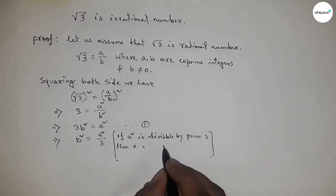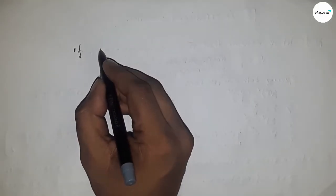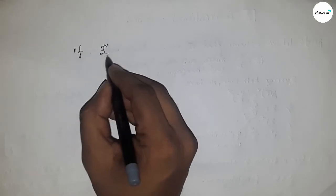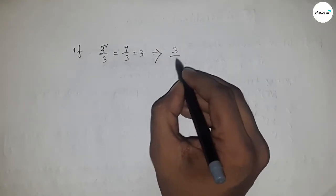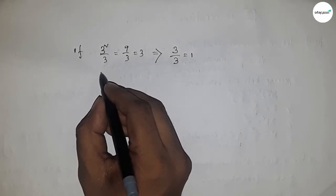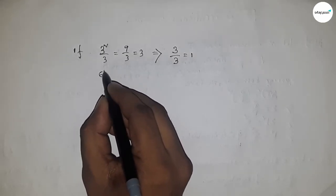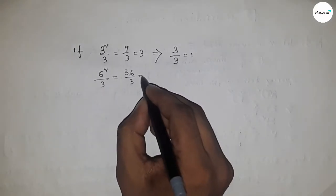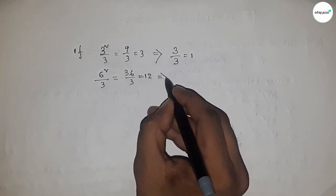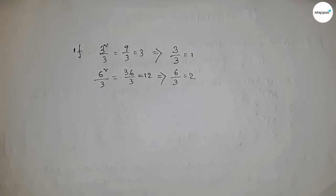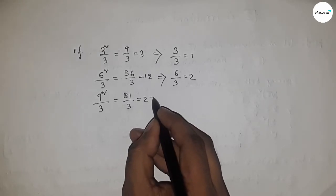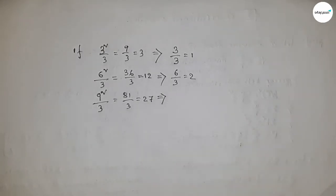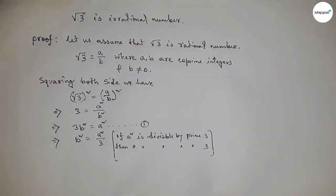Here we apply a theorem: if a squared is divisible by a prime 3, then a is also divisible by prime 3. For example, 3 squared is 9, and 9 divided by 3 is divisible. Also 6 squared is 36, divided by 3 is 12 — divisible. And 9 squared is 81, divided by 3 is 27 — also divisible.